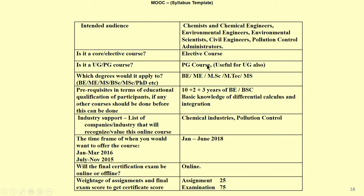A lot of people ask me: is it a PG course or UG course? I would say it is a PG course, but conditions in our country are so fluid that within the next 10 years I expect it to be taught at the undergraduate level also. The applicable degrees include MSc, MTech, MS in engineering, ME in engineering, and BE in engineering — specifically chemical engineering, environmental engineering, civil engineering, and pollution control.